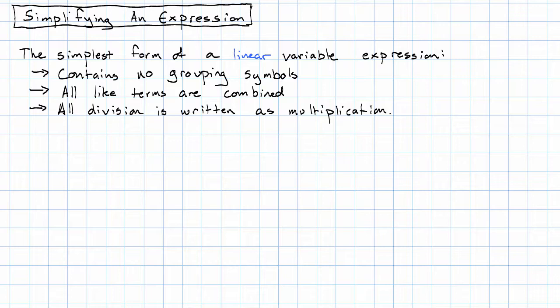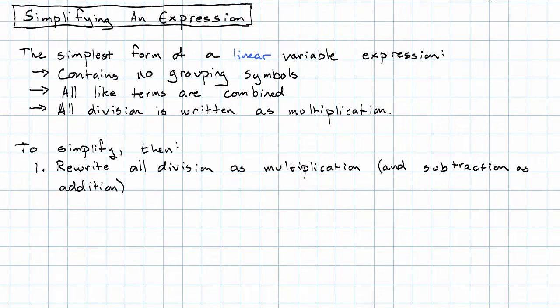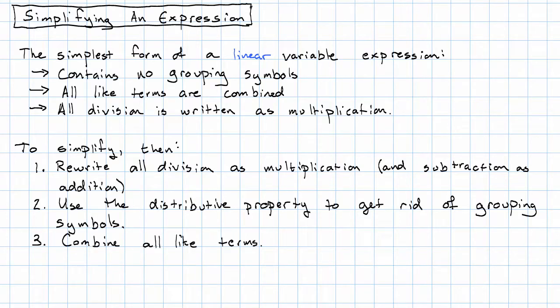With that in mind, we can see what we need to do to get simplest form. It's just a question of what order is best. First, we're going to rewrite all division as multiplication, and at the same time rewrite subtraction as addition, so we only have to deal with addition and multiplication. Next, we're going to use the distributive property to get rid of grouping symbols. And finally, we're going to combine all like terms.